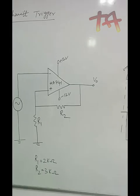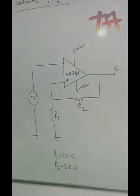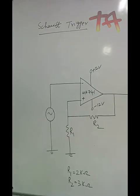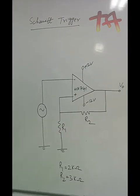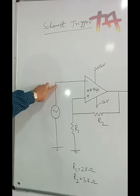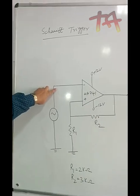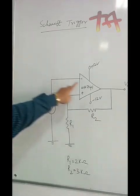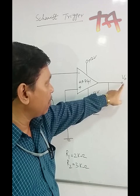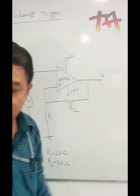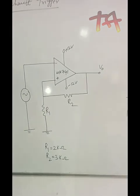Now we are coming to the oscilloscope channel setup. In this case, both channels are used: one channel will display the input waveform, and another channel will display the output waveform, connected accordingly.